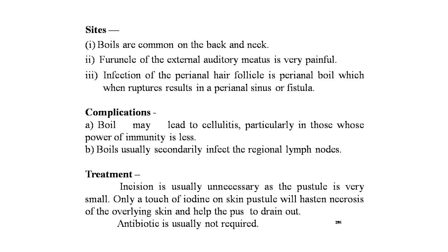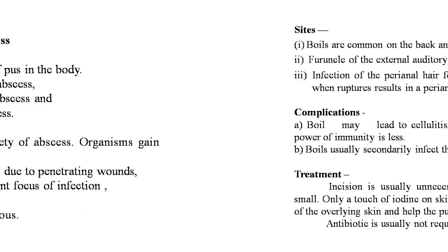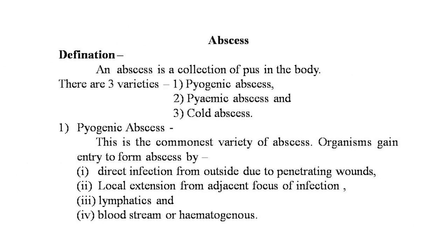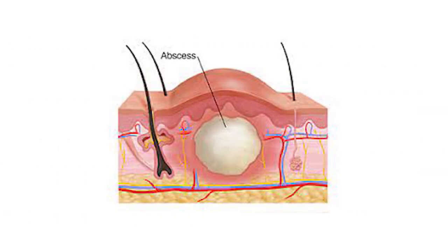The second topic is the abscess. An abscess is a collection of pus in the body. There are three types: pyogenic abscess, pyemic abscess, and cold abscess. The pyogenic abscess is the commonest variety. Organisms gain entry to form an abscess by direct infection from outside due to penetrating wounds, local extension from an adjacent focus of infection, lymphatics, bloodstream, or hematogenous spread.